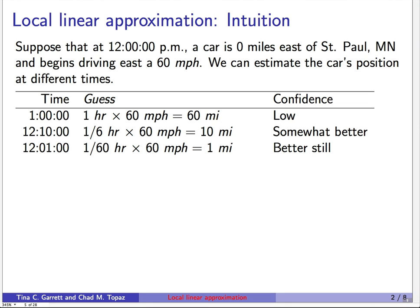What about one minute after noon? A minute is a 60th of an hour, so we estimate 1/60th of an hour times 60 miles per hour is one mile. We would guess the car is one mile east of St. Paul, and we would have a bit more confidence in that prediction. There's less of a chance that in one minute the car would have stopped, sped up, slowed down, or changed direction.